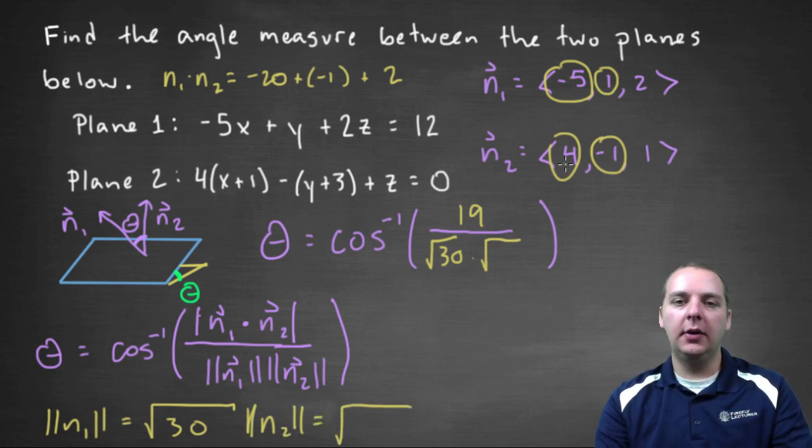That'll be the square root of four squared is sixteen, plus one, plus one. Negative one squared and one squared are both one. So sixteen, seventeen, eighteen, I believe.